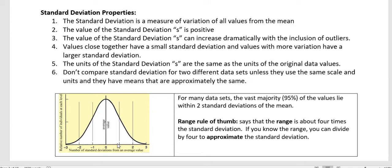Values close together have a small standard deviation. And values with more variation have a large standard deviation. The units of standard deviation are the same as the original data values that you were given. And you should not be comparing standard deviation for two different data sets unless they use the same scale and units. And they have means that are approximately the same. So in other words, we can't just compare standard deviations for things that are just totally different.